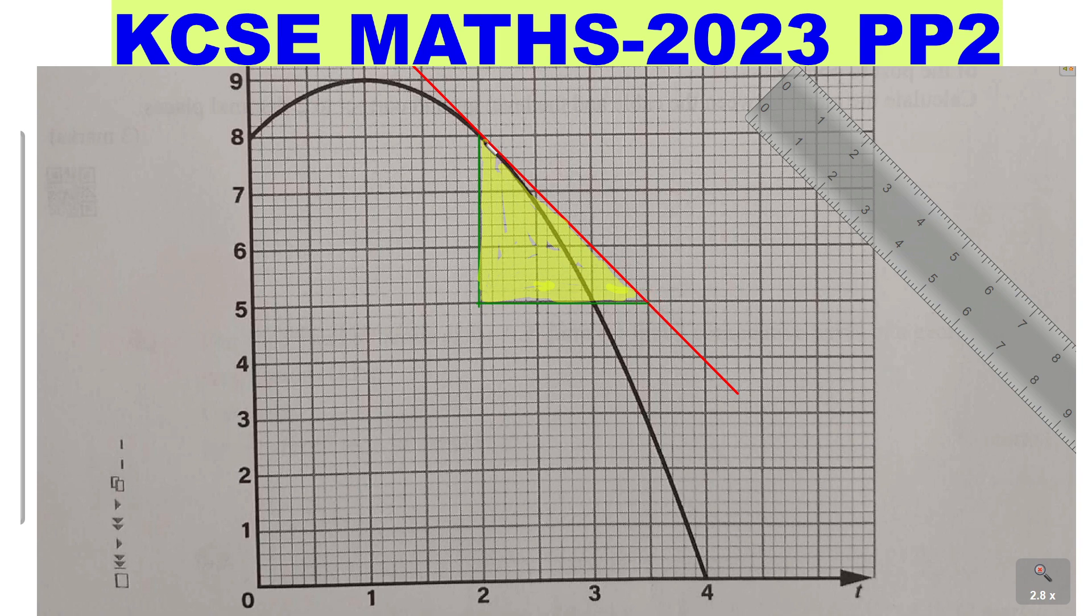So I'm picking this point here. This point and I'm picking this point. Any two points will work. So I'll pick this point is (2, 8). That is (2, 8). And I'll pick this one as well. This point that is here. This point is (3.5, 5). So use those two points to get the gradient.